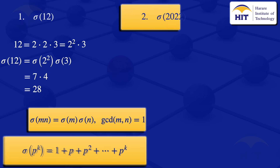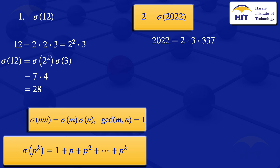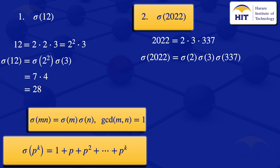Moving on to sigma(2022): the first step is to write 2022 as a product of its prime factors, giving us 2 × 3 × 337. Since 2, 3, and 337 are relatively prime, we can use the multiplicative property: sigma(2022) = sigma(2) × sigma(3) × sigma(337).